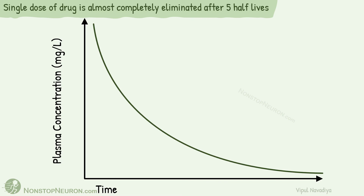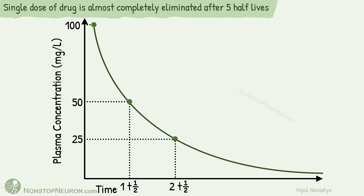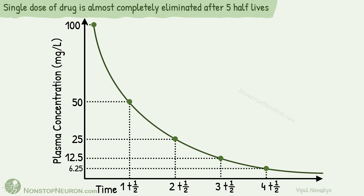Now the final point: after a single dose, drug is almost completely eliminated after 5 half-lives. This can be explained with the same graph. Let's say after a single dose, the drug achieves a concentration of 100 mg per litre. After one half-life, it drops to 50 mg per litre. After the second half-life, it drops to 25 mg per litre. After the third half-life, it reaches 12.5 mg per litre. After the fourth half-life, it's 6.25 mg per litre. And after the fifth half-life, it's 3.125 mg per litre — this is only 3% of the very initial value, and in most cases it can be neglected. Thus, after a single dose, the drug is almost completely eliminated after 5 half-lives.